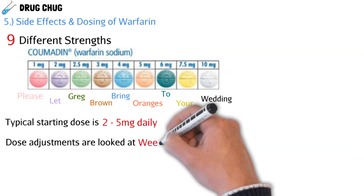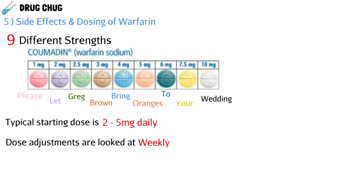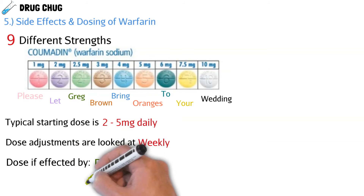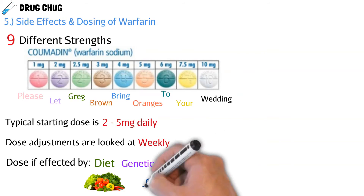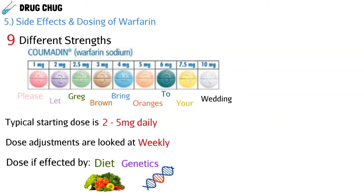The typical starting dose of warfarin is 2 mg to 5 mg daily. Dose adjustments are evaluated weekly using the INR. The dose is affected by diet — more green leafy vegetables means a higher dose is needed. Genetics also plays a role in dosing. Warfarin also has two enantiomers — S and R — where the S form is more potent.